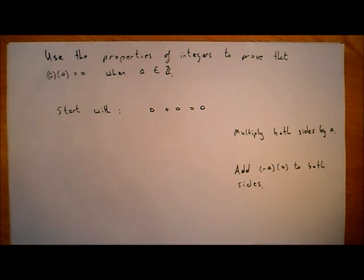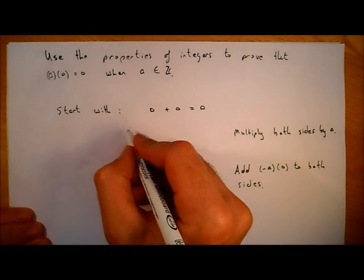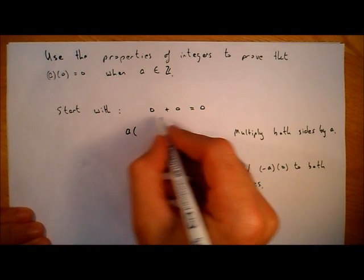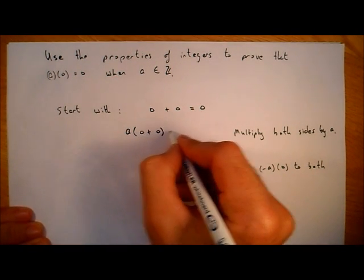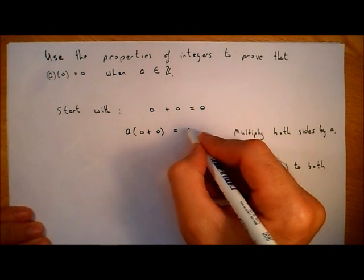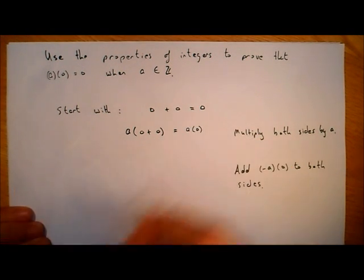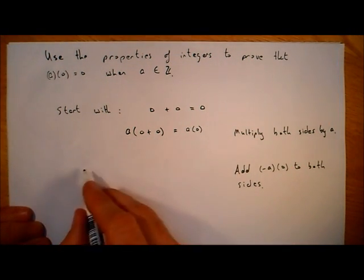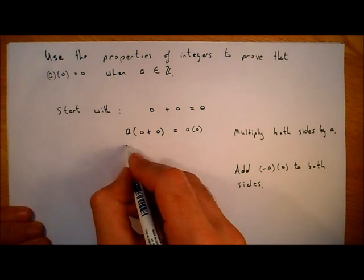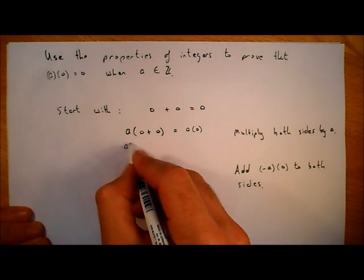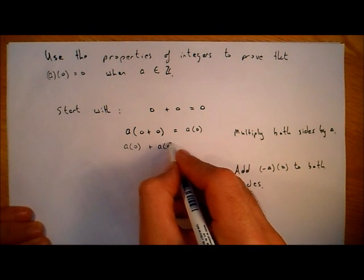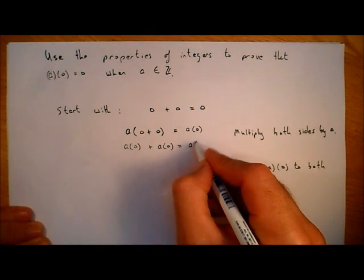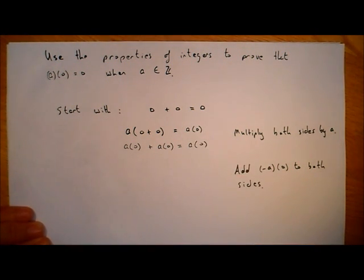The first step is to multiply both sides by a. So we take a multiplied by zero plus zero on the left-hand side, and if we do it to the left-hand side we have to do it to the right-hand side as well. We get a times zero plus zero equals a times zero, which we can write as a times zero plus a times zero equals a times zero.